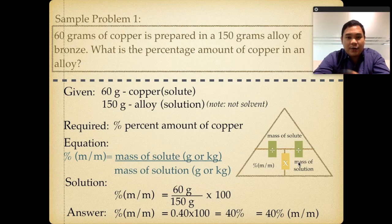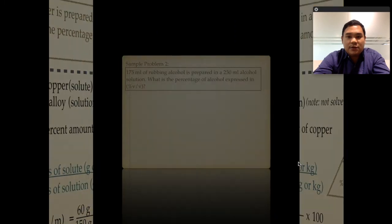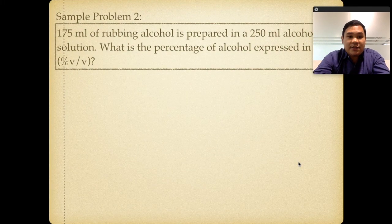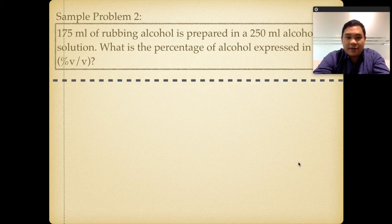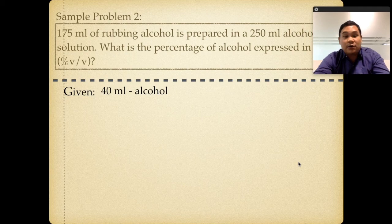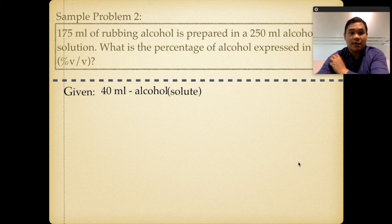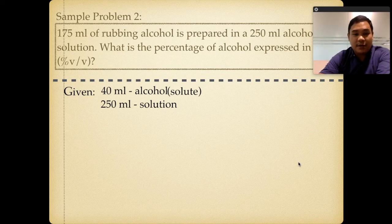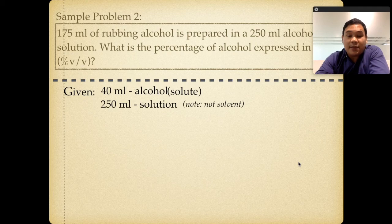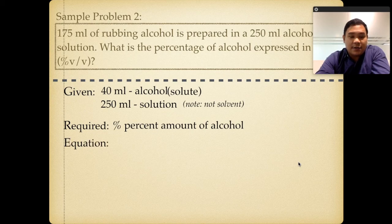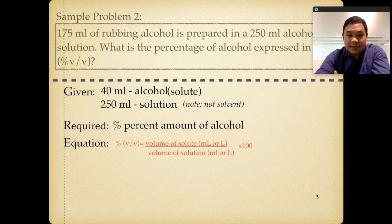Sample problem number 2: 175 mL of rubbing alcohol is prepared in a 250 mL alcohol solution. What is the percentage of alcohol expressed in percent V/V? The given is 175 mL alcohol as the solute and 250 mL as the solution — note that 250 mL is not the solvent. The required is the percentage of alcohol.